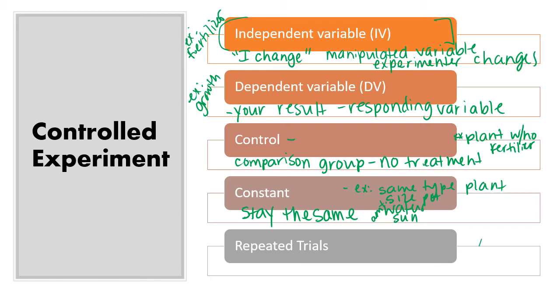And then repeated trials. You always want to, three times usually is the magic number. But you don't have to wait necessarily to finish growing the plant. You can just set up three, three of each. So these would be the ones with fertilizer. Those are the ones without fertilizer. And then you have your repeated trials.